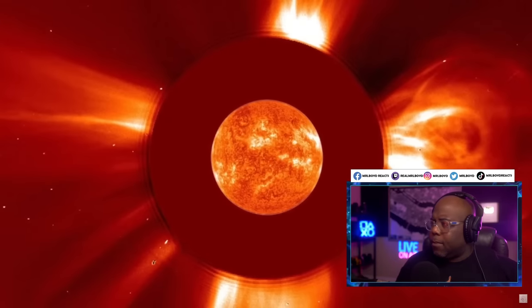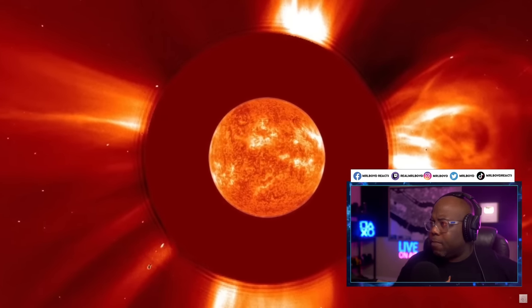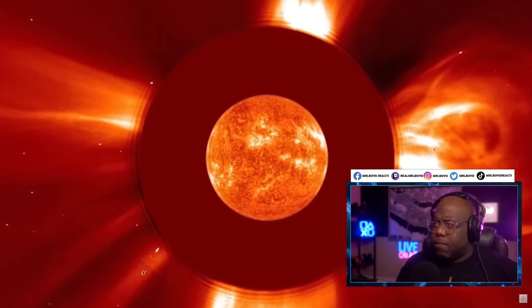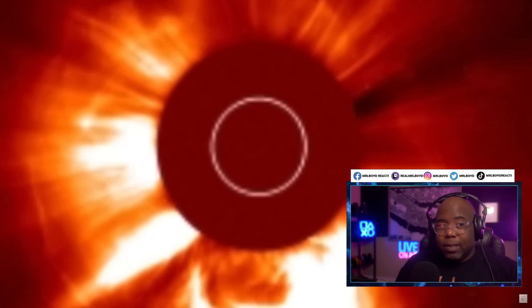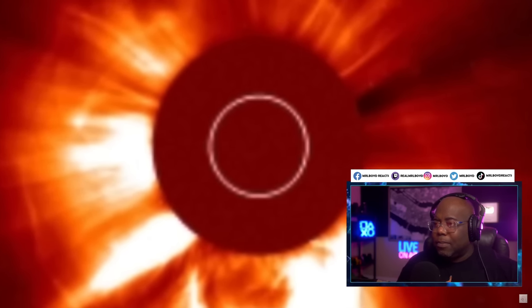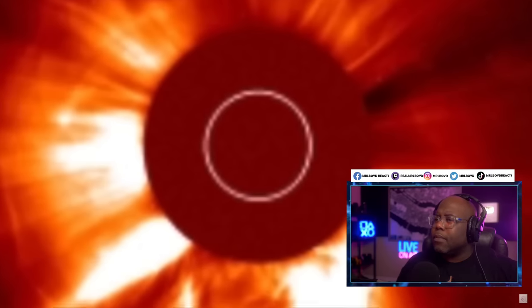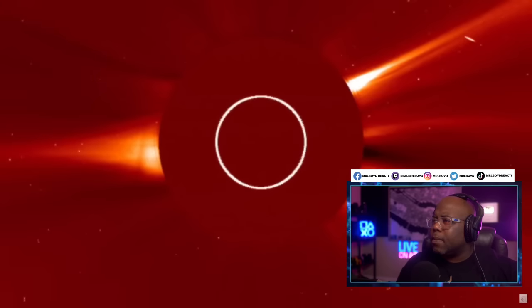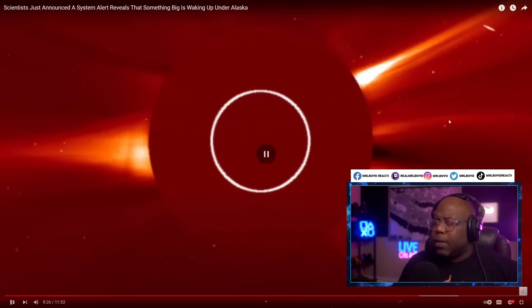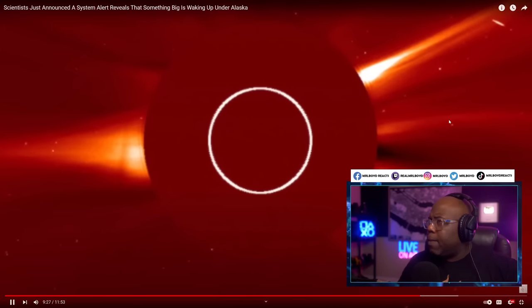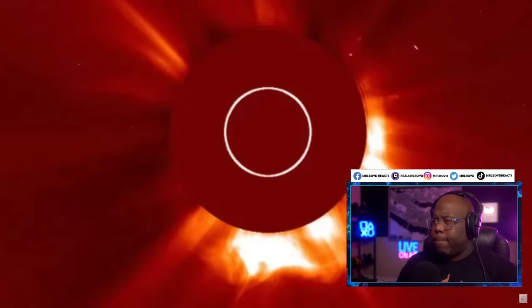So as we approach 2025, solar activity will increase, creating everything from increased auroras to satellite destruction. The most recent sun activity has been a series of CMEs, or coronal mass ejections. Basically, CMEs are bubbles of solar material that the sun expels. They are made up of plasma gas with magnetic fields that create issues when they interact with the Earth's magnetic field. Solar flare, I think is what it's called.